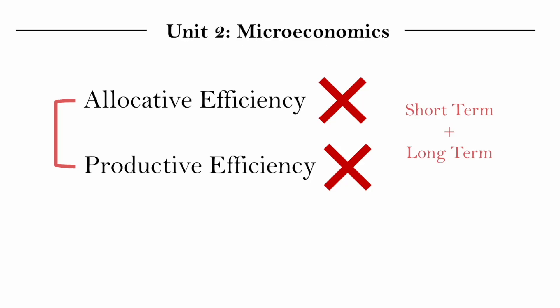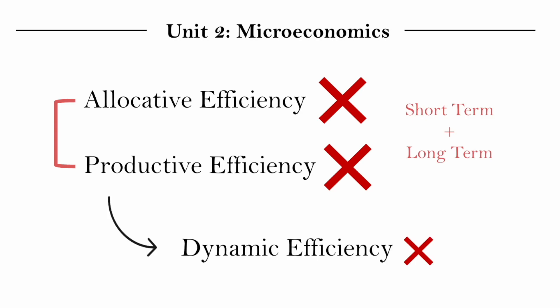We ended the last video where monopoly as a market structure was neither allocatively nor productively efficient, both in the short and long term. And with no competition, it is also not dynamically efficient, which is sort of a productive efficiency in the long run, where the lack of competition results in the firm not having to work hard to improve their productive efficiency over time.